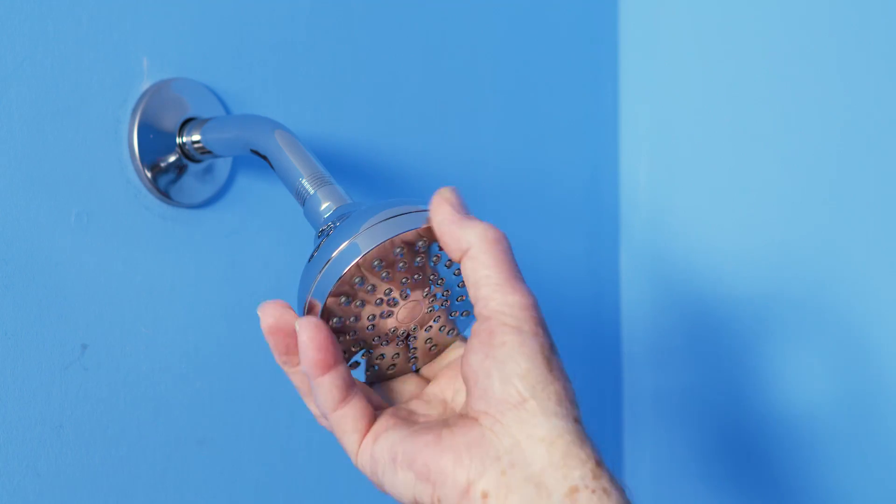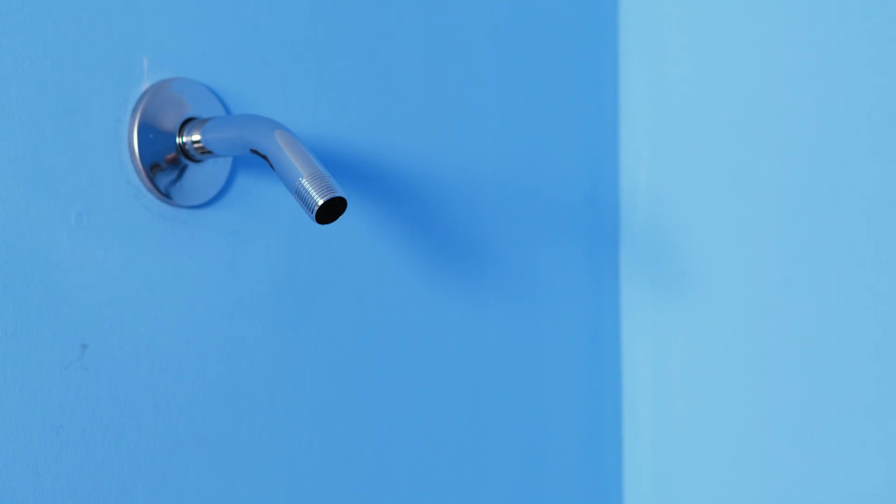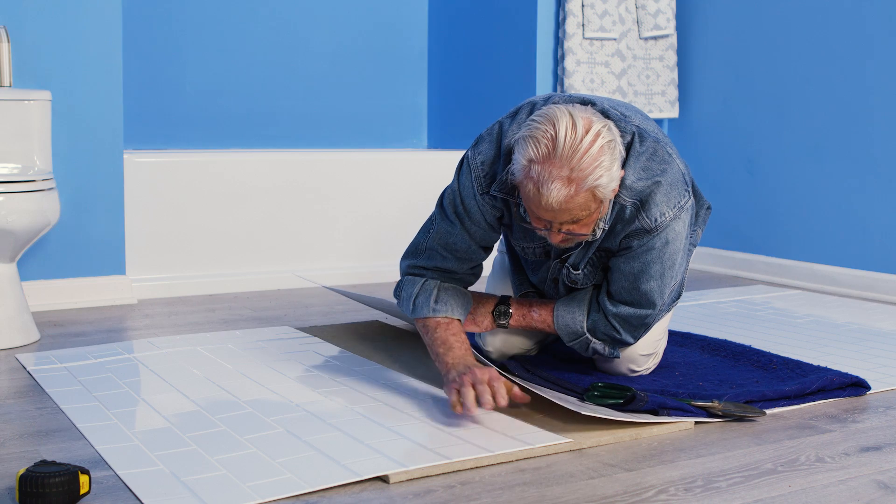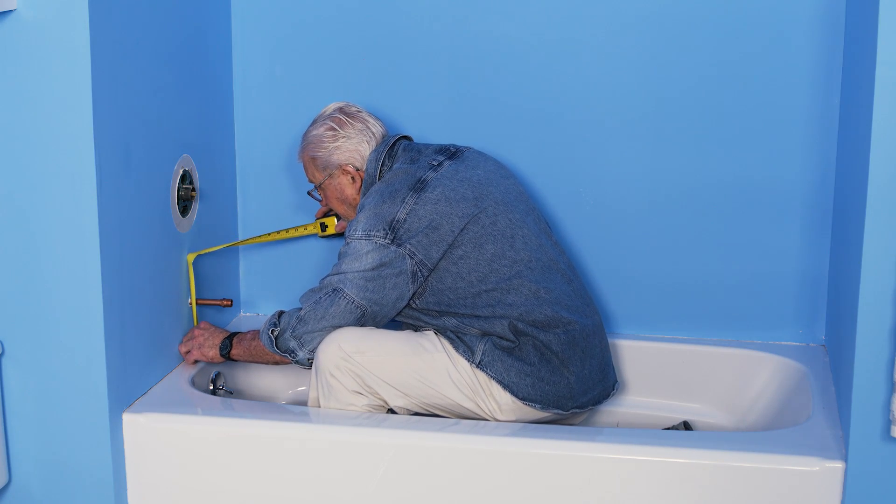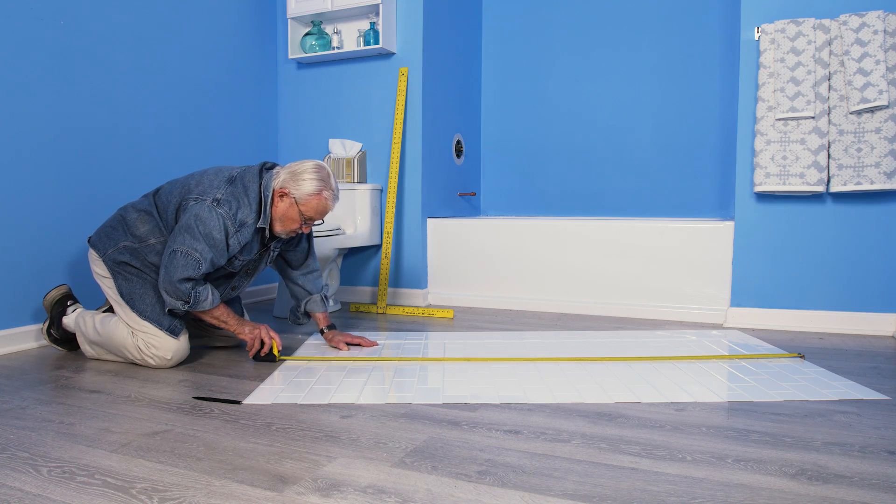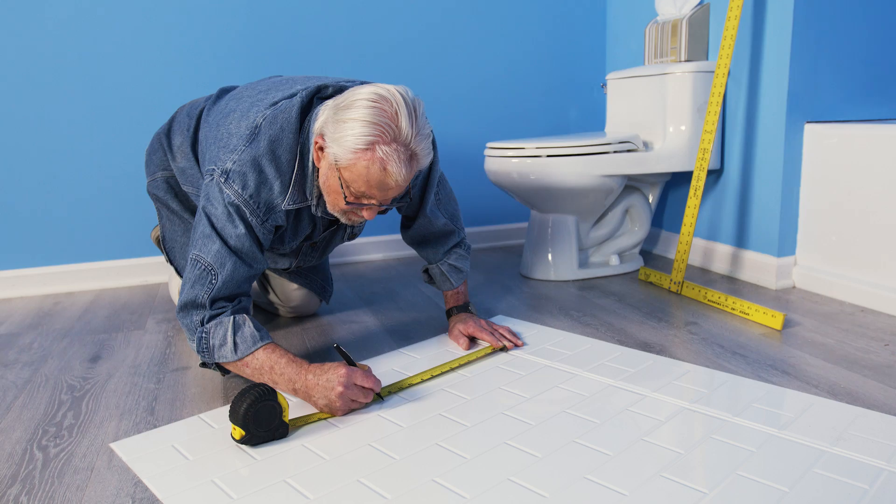The first thing we'll want to do is remove the plumbing fixtures. With the panel cut to size, I begin measuring the wall location of the fittings. I mark the location for the faucet, the shower valve, and the shower arm.